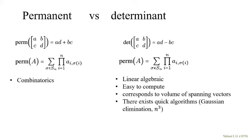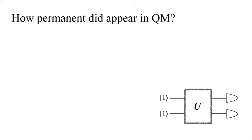But for permanent, it's more related to combinatorics. It seems like we must compute n factorial terms. Actually, people already proved that permanent is sharp-P complete, which means that computing permanent is a very hard task.